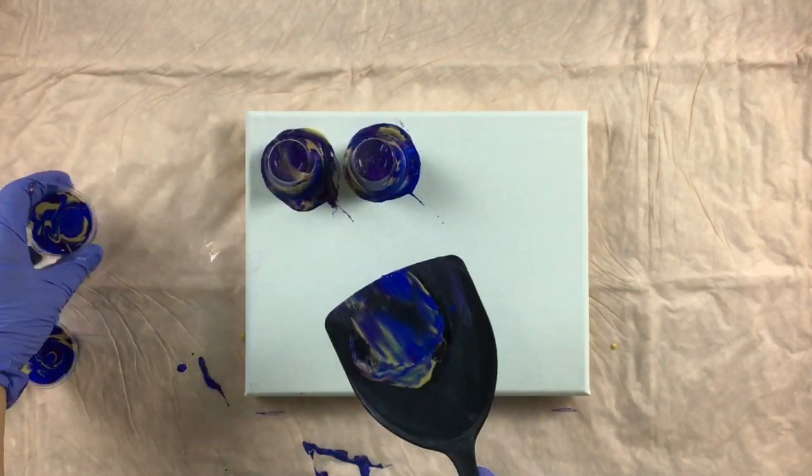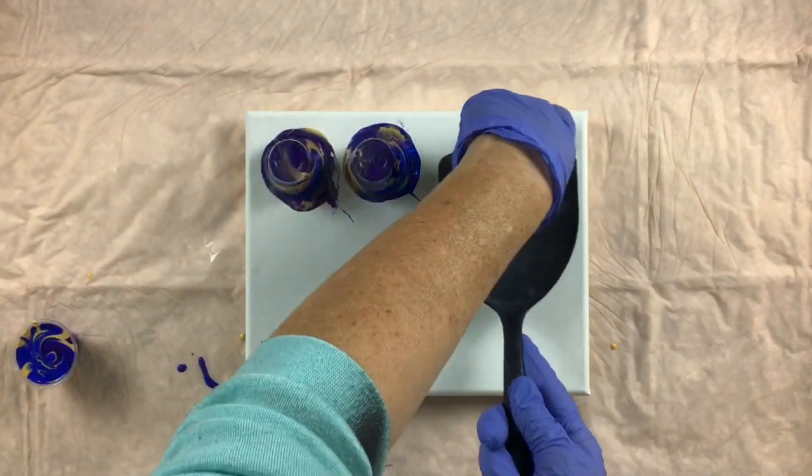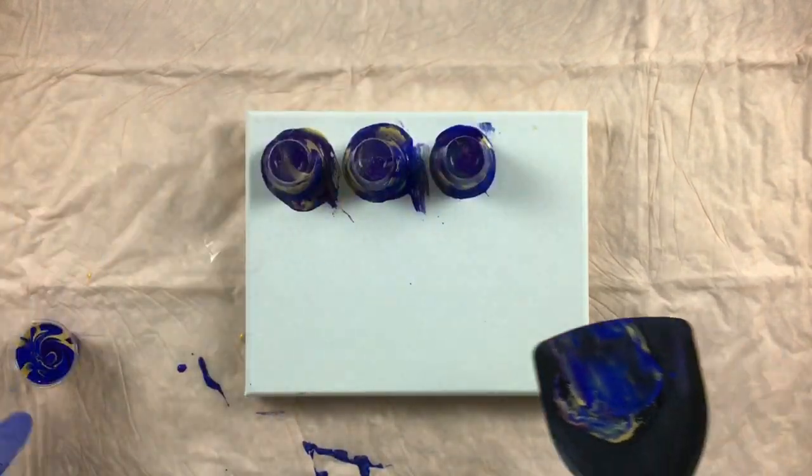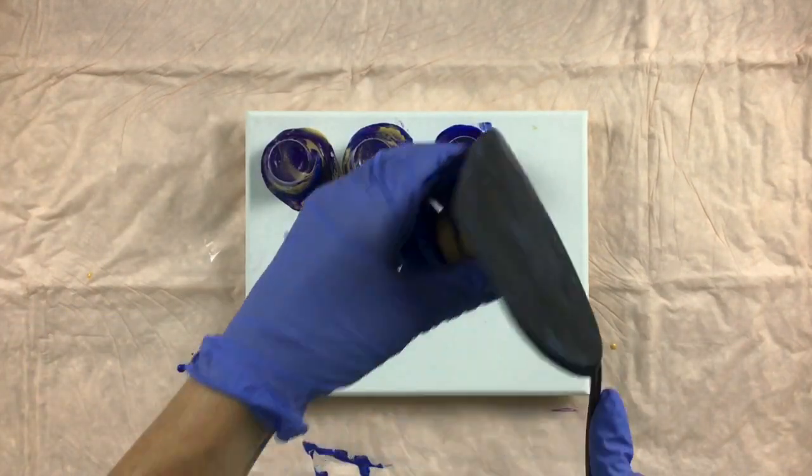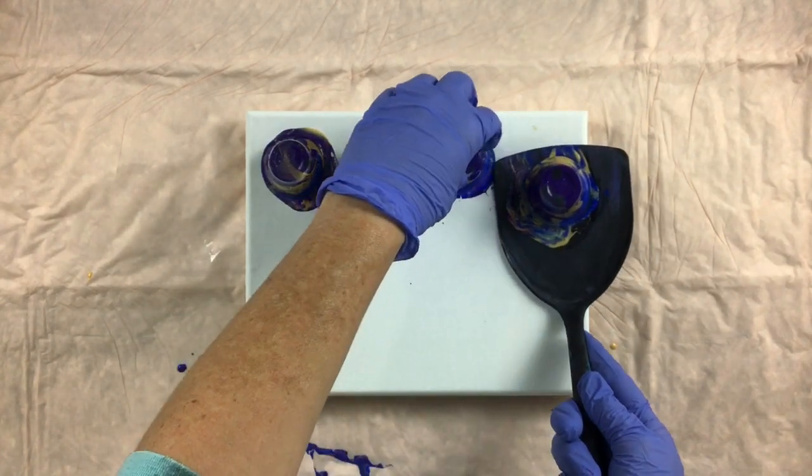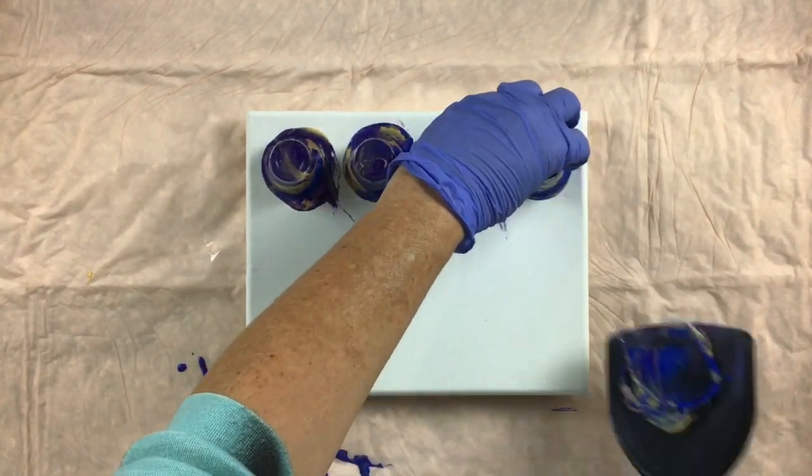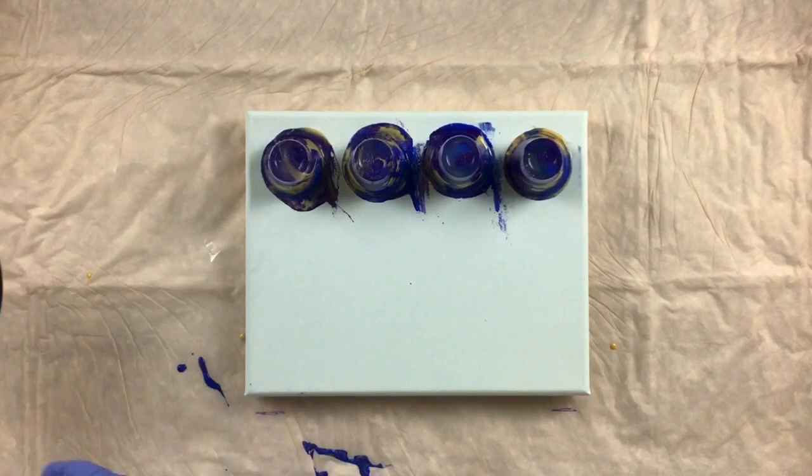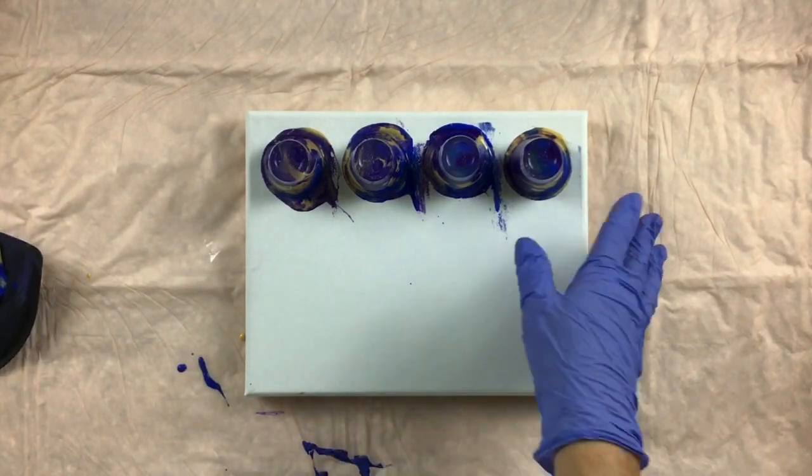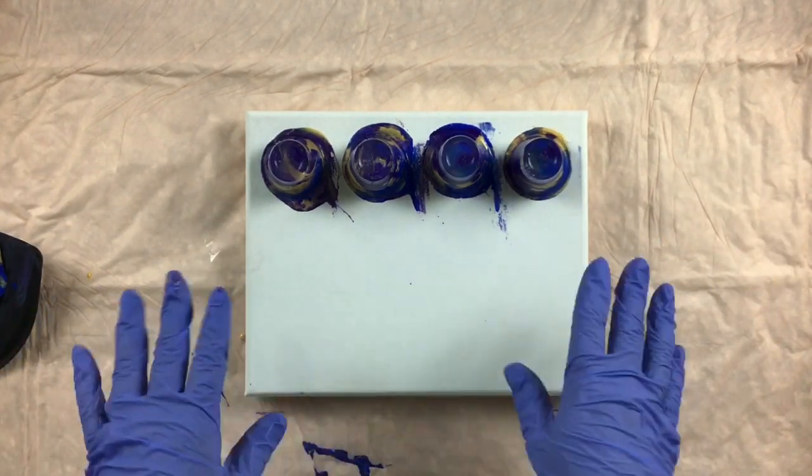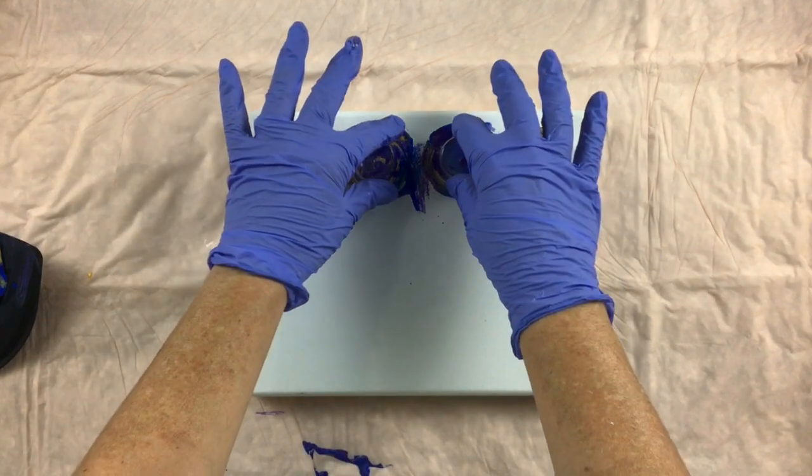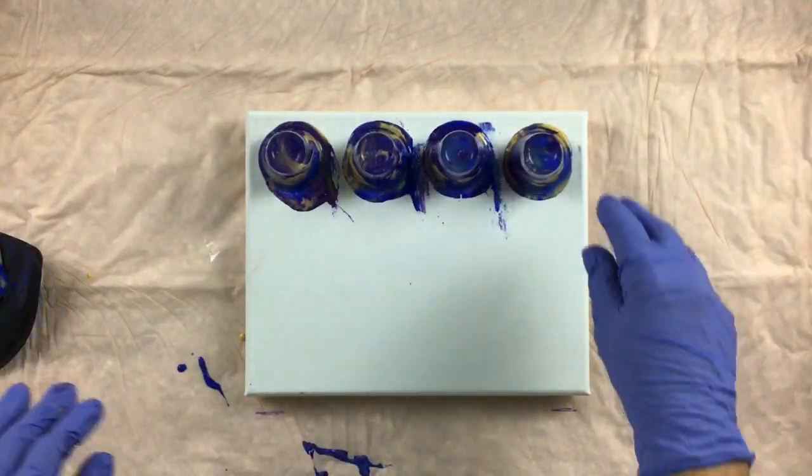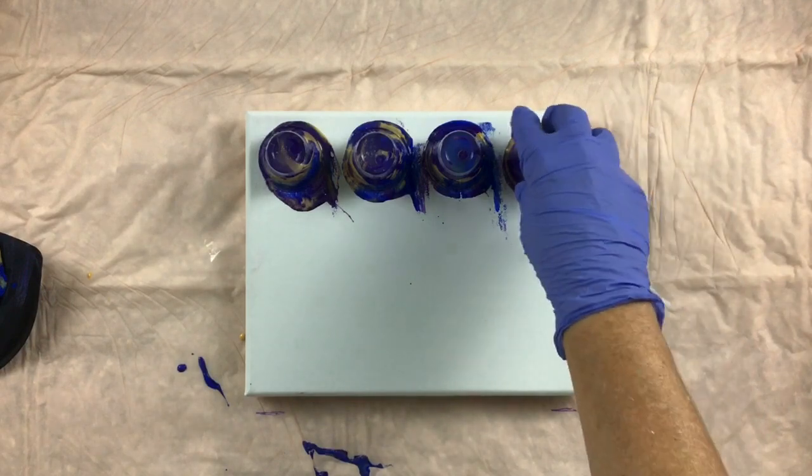There we go. Move the spatula. Oh, these are some pretty colors with each other. And as you can see already with the WD-40 silicone, it's already gone down. So it's ready for the first flip cut, flip and drag. Sorry.